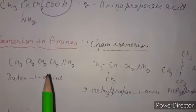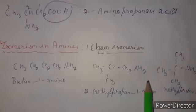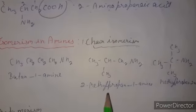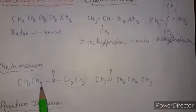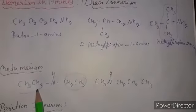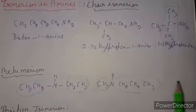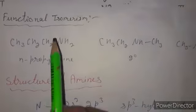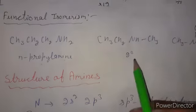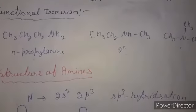Next we discuss isomerism in amines. Chain isomerism: the carbon chain may be linear or branched — for example, butan-1-amine and 2-methylpropan-1-amine. Metamerism: two different alkyl groups on nitrogen — for example, one ethyl and one propyl group versus one methyl group. Position isomerism: the amino group may be at different positions, such as propan-1-amine and propan-2-amine. Functional isomerism: primary, secondary, and tertiary amines having the same molecular formula can interconvert.